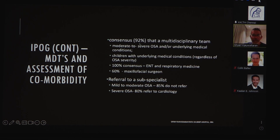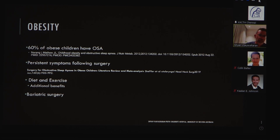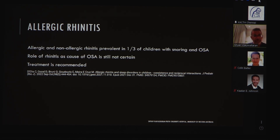There was 92 percent agreement on MDT assessment. Referral to subspecialists was recommended for mild-to-moderate OSA, and for severe OSA, most experts recommended referral to cardiology. Passive smoke exposure nearly doubles the risk of OSA in this patient cohort. Obesity plays a big role — about 60 percent of obese children will have OSA, and the majority of obese children will have persistent OSA following adenotonsillectomy. In these patients we should consider diet, exercise, referral to an endocrinologist, and in some patients bariatric surgery. Both allergic and non-allergic rhinitis are seen in patients with OSA and are a cause of ongoing OSA following surgical intervention.